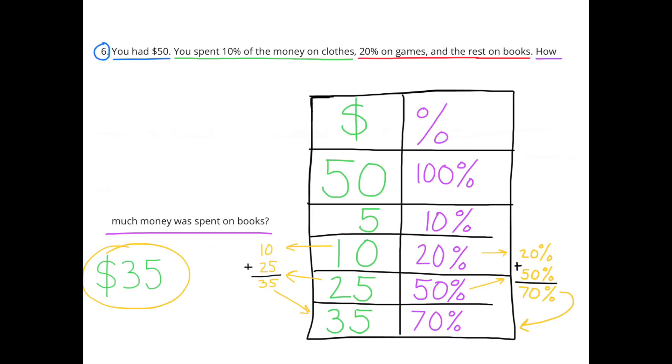And 70% is 50% plus 20%. And 50% of $50 is $25, and 20% of $50 is $10. So 25 plus 10 is $35. So 70% of $50 is $35. You spent $35 on books.